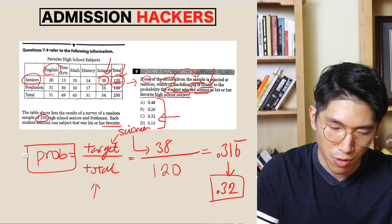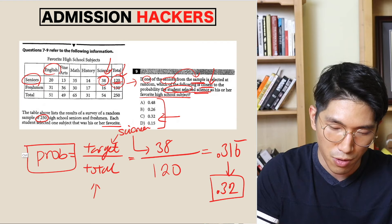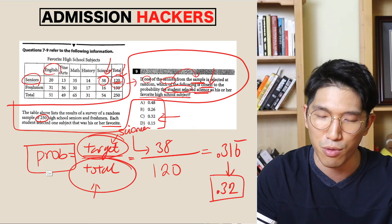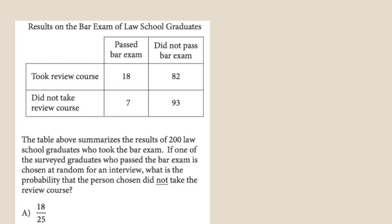All we have to do for this probability question is understand the context, and correctly identify what the target is and what the total is. If you can do that, you are going to be set. Let's go to the next question. Pause the video, read it out, and see if you can solve it on your own. When you're ready, play the video again.